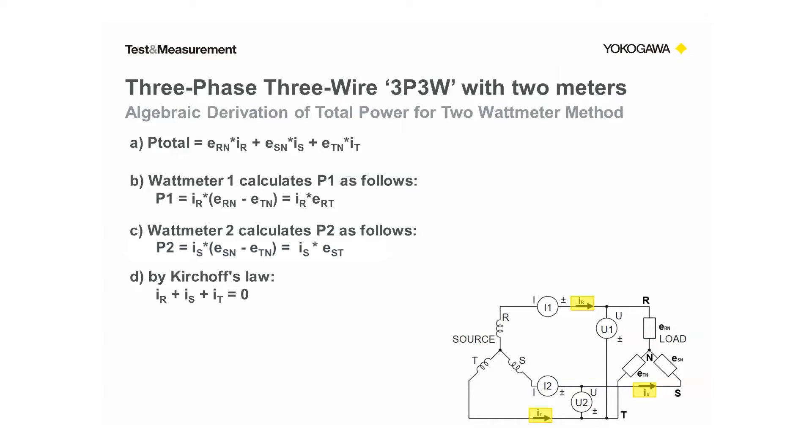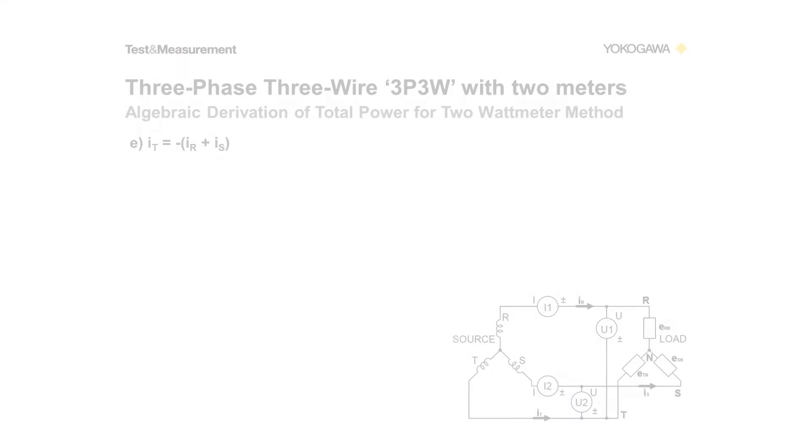There's no neutral current in this equation. So we're going to solve for I sub T in terms of IR and IS. I've written that equation here as equation E.